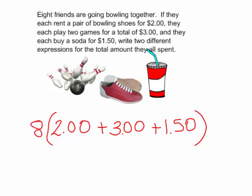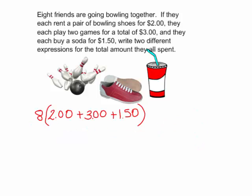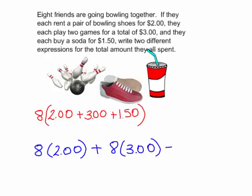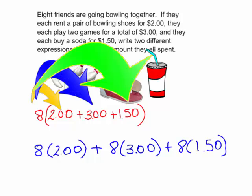We could have done this another way — we could have multiplied first. The 8 friends all rented bowling shoes for $2, plus the 8 friends all paid $3 for the games, and the 8 friends all bought a soda for $1.50. This is an example of the distributive property.